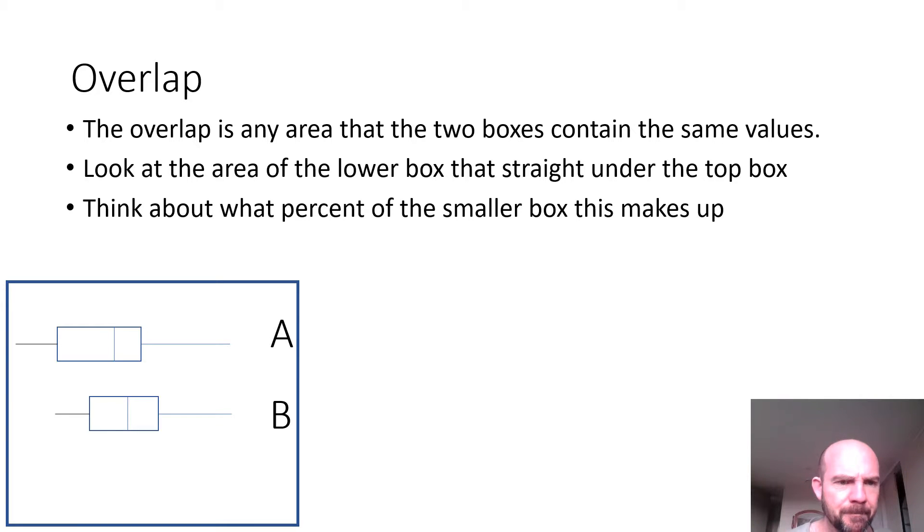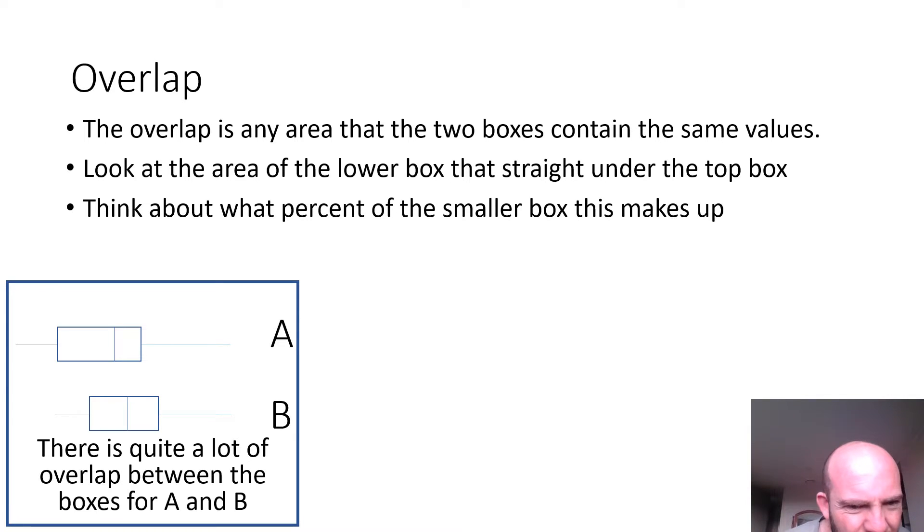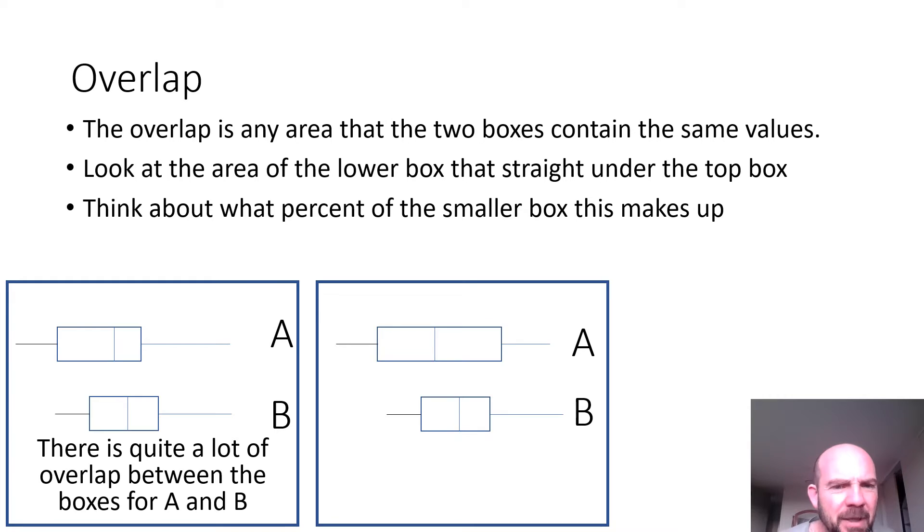So let's have a look here. Now, here I would say B is the smaller box. And it's more 70, maybe even, yeah, about 70% there. Definitely more than the last one. There's quite a lot of overlap. Or you could still say moderate, you know. There's room for disagreement.